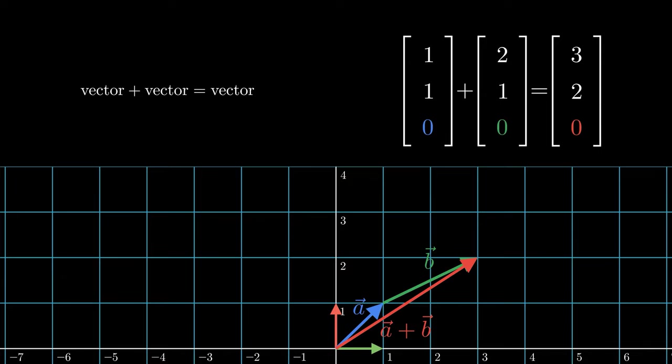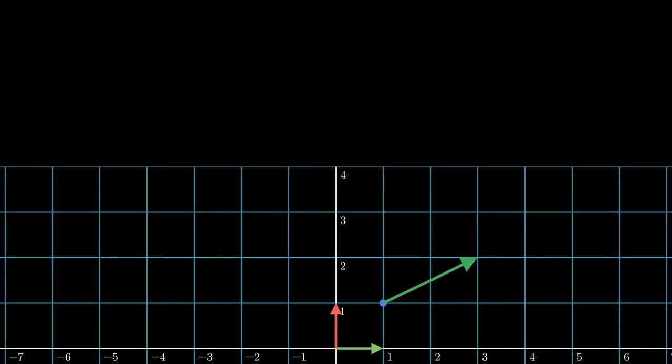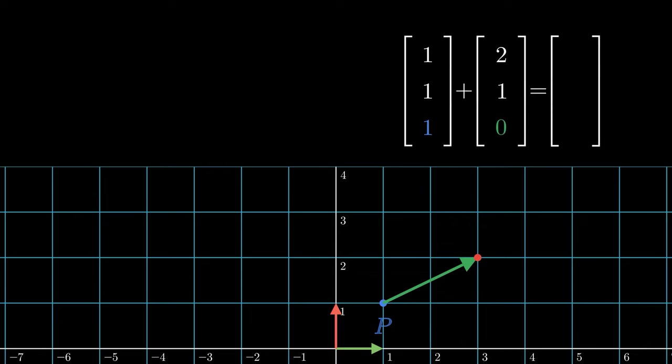How about point adds a vector? That's moving a point along the vector, resulting in a new point. Seen in homogeneous coordinates, the last digit is 1 plus 0 is 1, meaning a point plus a vector is a point.